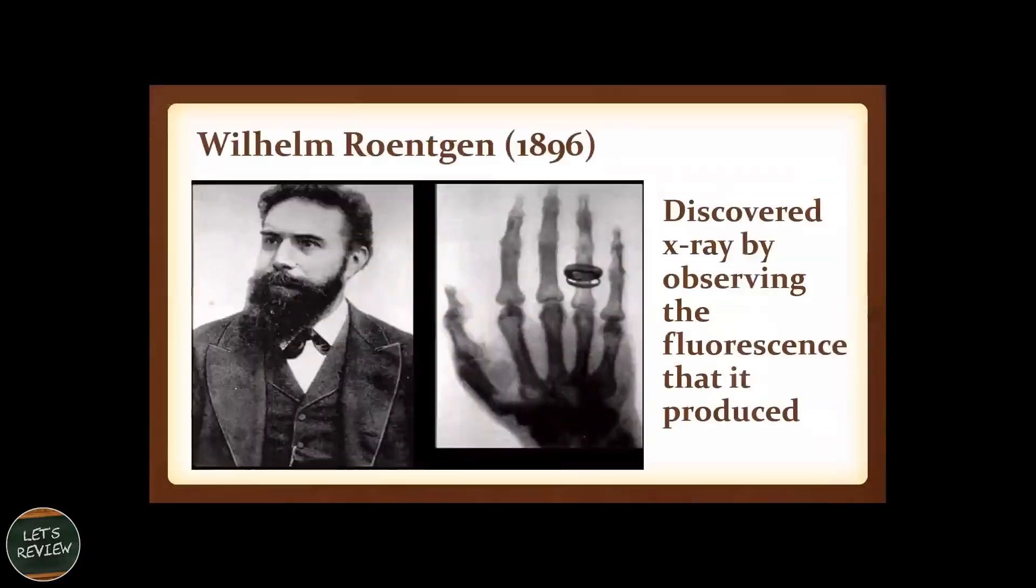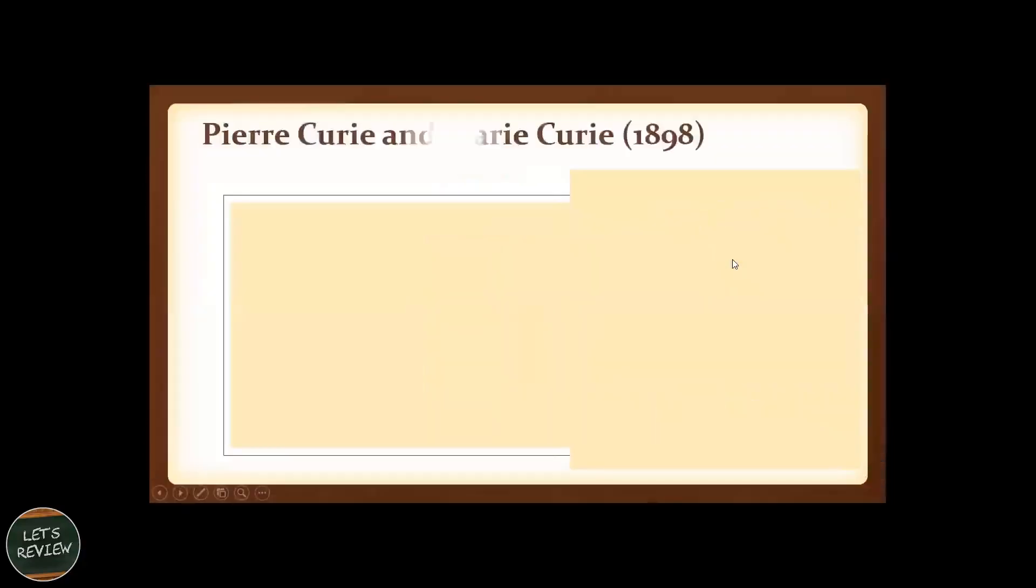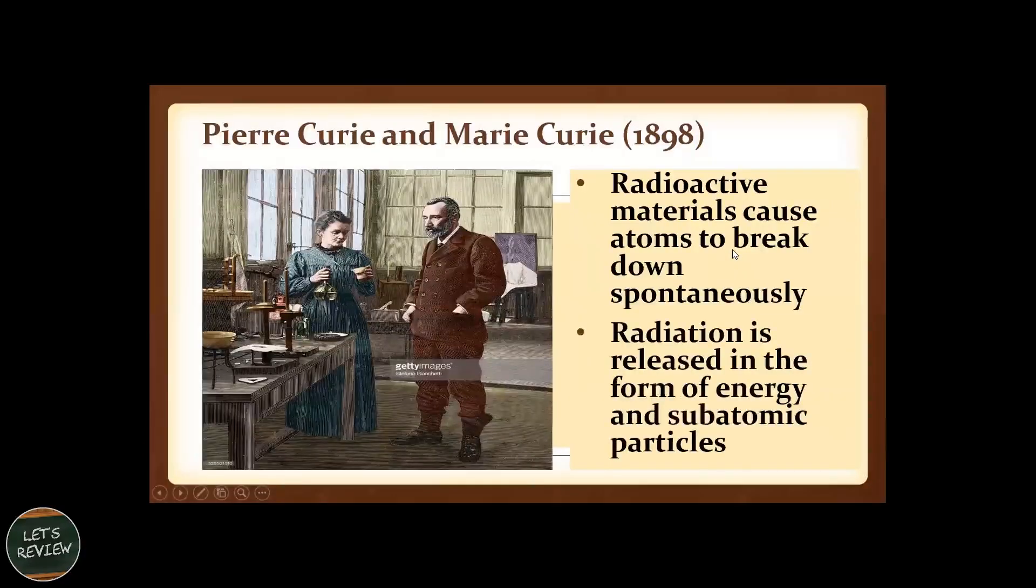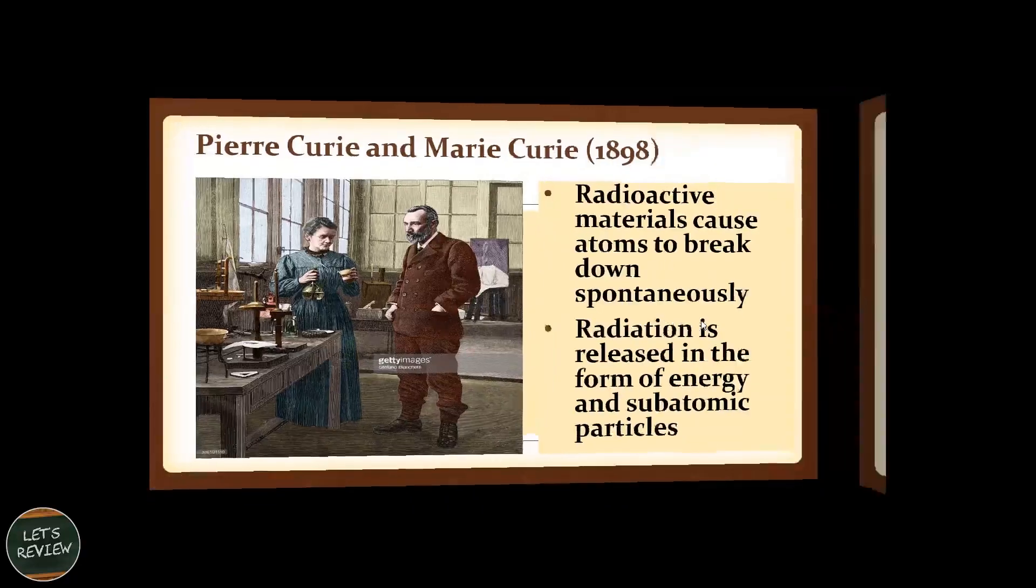The one who discovered X-rays is Wilhelm Roentgen. That was 1896, observing the fluorescence that it produced. Pierre Curie and Marie Curie in 1898 made this radioactive materials cause the atoms to break down spontaneously, and radiation is released in the form of energy and subatomic particles.